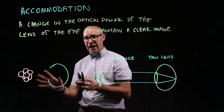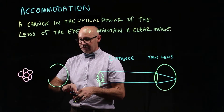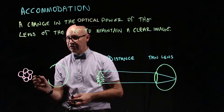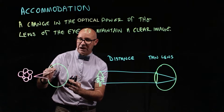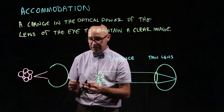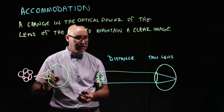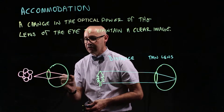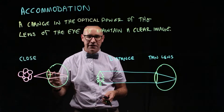Now let's look at what happens when we're looking at things up close. The difference here is that the light rays — I'm going to put them in the same colour as our flower — because it's very close, the light rays are coming in at a very sharp angle. For us to be able to bend the light enough to converge onto the retina, we need a very thick lens. A very thick lens has a stronger optical power, and that allows the light to converge to the focal point on the retina. So when we're looking at things that are close, we need a thick lens.